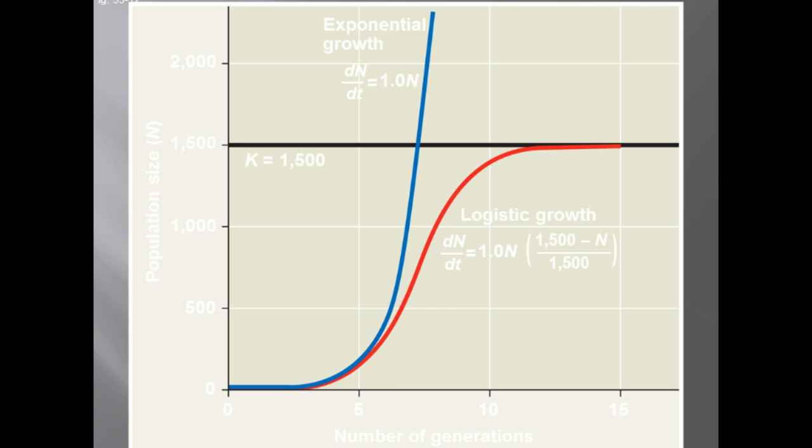The logistic model produces a sigmoid, or S-shaped curve. You need to know the difference between the J-shaped exponential growth curve and the S-shaped logistic growth curve. Make sure you have this graph in your notes and know the difference between the two.